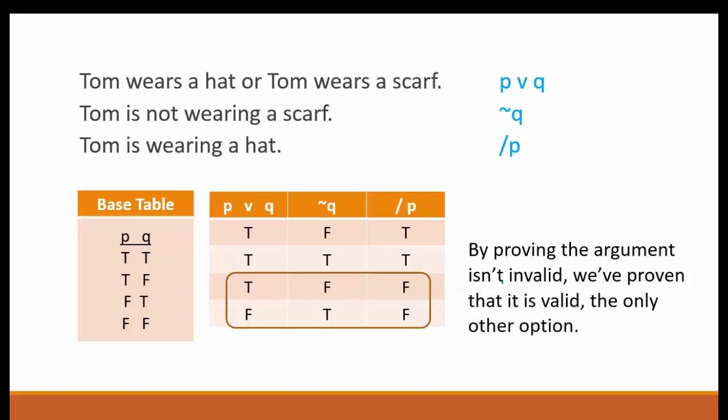Just to quickly recap, our strategy for testing the validity of this argument was to look for a row in the truth table in which all premises are true and the conclusion is false. This is because valid deductive arguments require that if all the premises are true and the argument is valid, the conclusion must be true. So if the premises are true and the conclusion is false, we would have proof that it is invalid. This argument turns out to be proven valid because there are no rows that show it is invalid. And since all deductive arguments must be either valid or invalid, we have proven it is valid.